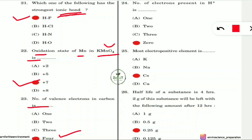Question 24: How many electrons are present in H⁺ (hydrogen ion)? The answer is zero. In an H⁺ ion, no electrons are present.